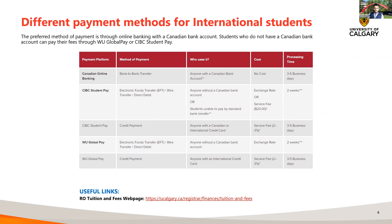If you don't have a Canadian bank account, there are other options available for international students. The second option is CIBC Student Pay, and the third is Western Union Global Pay. Students can make payments using these two methods via bank wire transfer, or if they have a Mastercard or Visa credit or debit card. The processing time is higher than Canadian online banking — it takes at least two weeks for us to receive the payments. These companies take their own processing time, and once the payment reaches us, we take our own processing time to post it on your account.